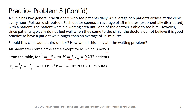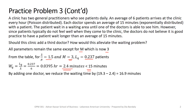We find WQ = 2.4 minutes — very short, and well under 15 minutes, so the policy is satisfied. If adding one doctor hadn't met the policy, we'd have added a fourth, but here a third is more than enough. The difference in waiting time is almost 17 minutes reduced — a very good achievement.